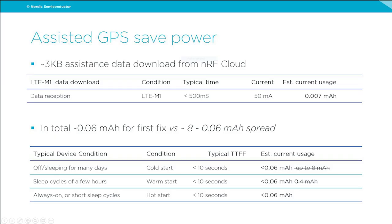With assisted GPS on the NRF9160, you download roughly 3 kilobytes of data from our nRF Cloud solution, typically done in less than half a second with an average current of around 50 milliamps. The estimated power consumption is really small compared to turning on GPS and waiting for satellites. This gives you much more predictable power usage — always much lower than staying and searching for satellites for a long time. Even if you don't need a very fast time-to-first-fix, assisted GPS is very useful.